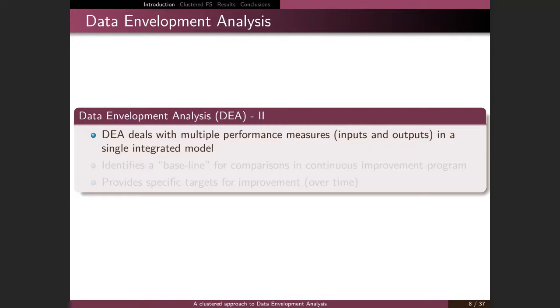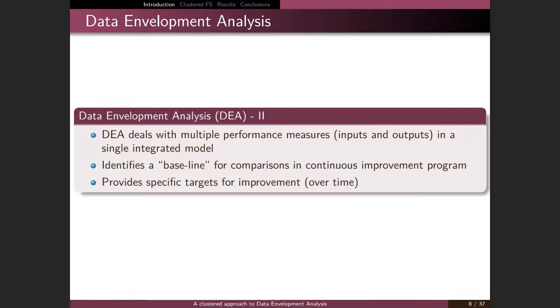Some key properties of DEA: it deals with multiple performance measures — both inputs and outputs — in a single integrated model. It also identifies a baseline for comparisons in a continuous improvement program and provides a specific target for improvement. For example, when comparing, we can say: you have to reduce this number of inputs in order to produce this quantity of output if you want to be efficient compared to this other firm.